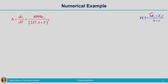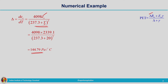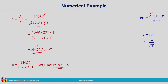Next term is delta — the gradient of the saturation vapor pressure curve. Substituting es (already calculated) and temperature into the expression, delta = 144.79 Pascals per degree Celsius. Converting to mmHg by dividing by ρg, where density of mercury is 13.6 and g is 9.81, delta = 1.086 mmHg per degree Celsius. So delta and ea are both obtained.